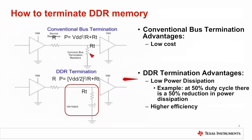With this active termination, the power dissipation is now Vdd over 2 squared over R plus RT. At a 50% duty cycle, an active terminator enables 50% lower power dissipation.